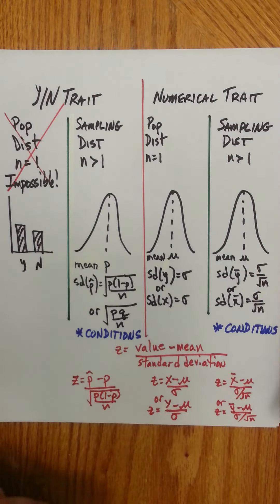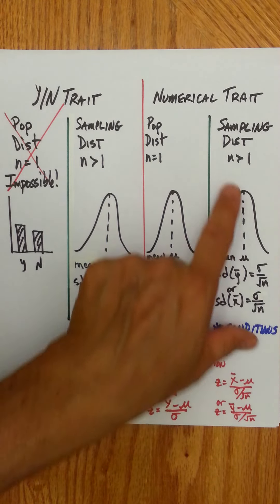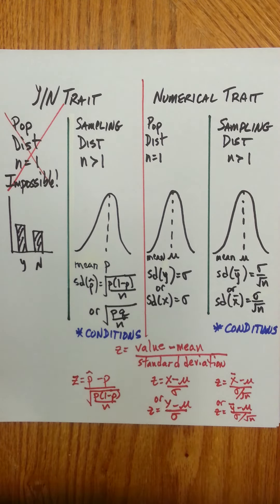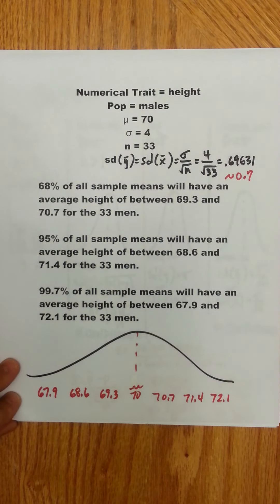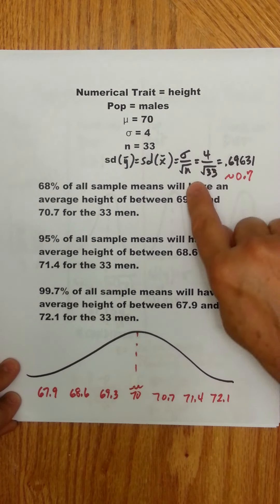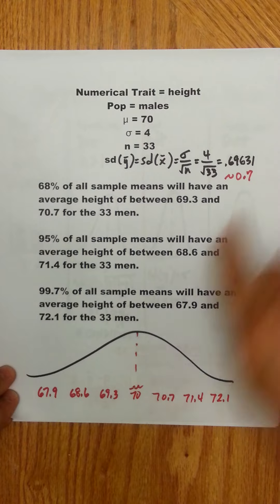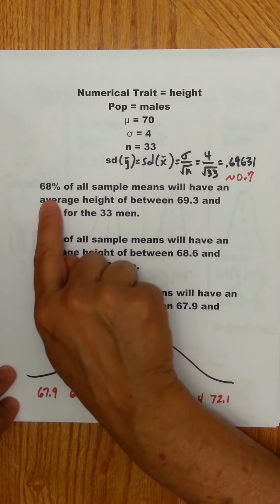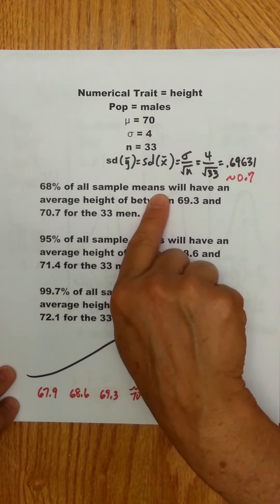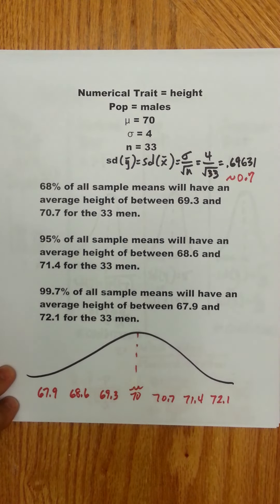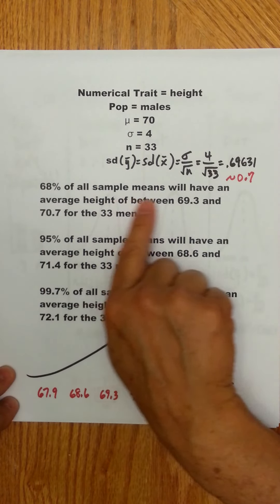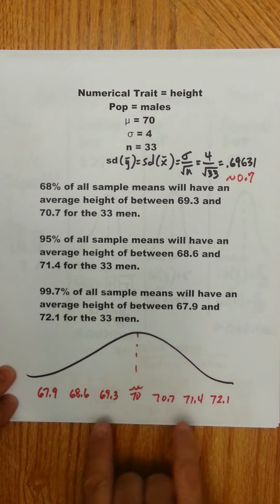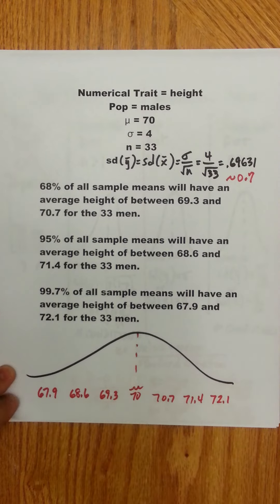To contrast that with the sampling distribution, where you have more than one male in a sample: suppose we're taking 33 males and averaging them. Our standard deviation now is sigma over square root of n, which rounds to about 0.7. Now your interpretation is that 68% of all sample means will have an average height between 69.3 and 70.7 for those 33 men, and so on using the empirical rule.